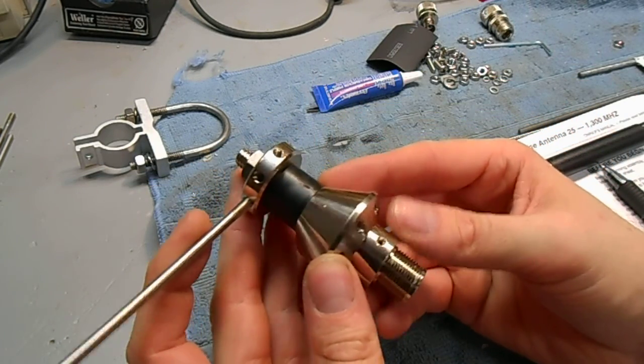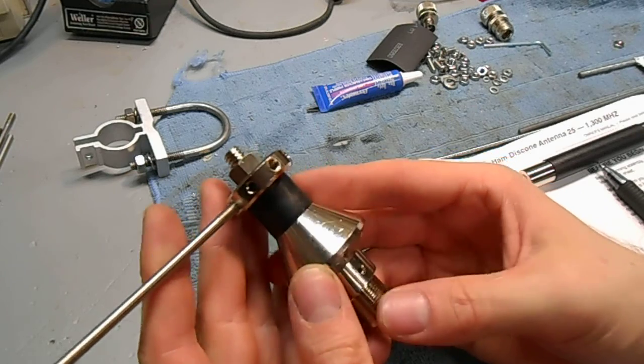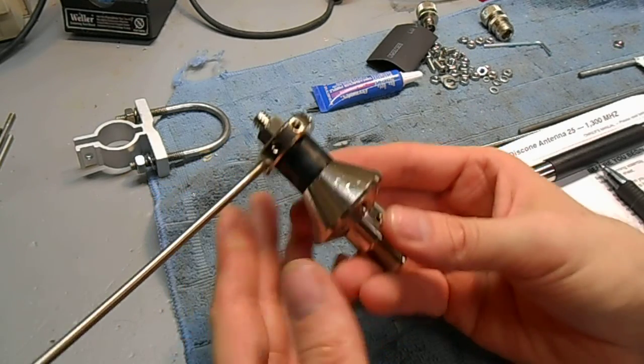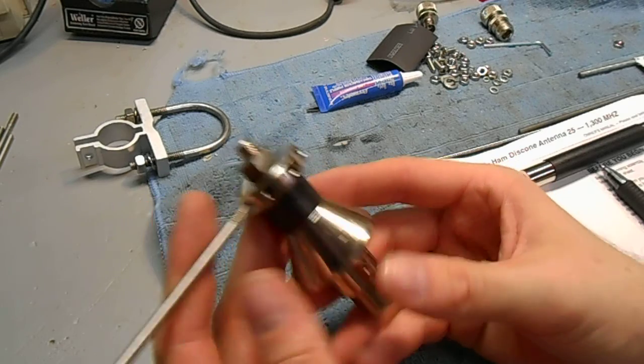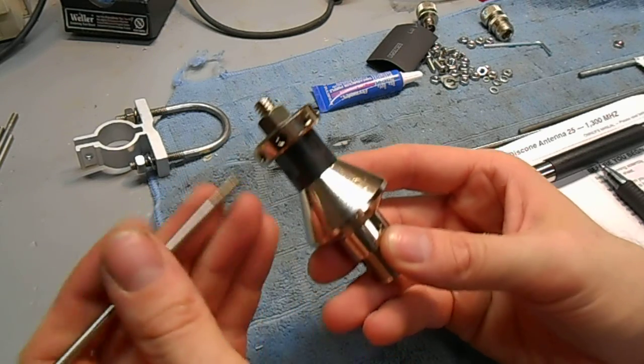The antenna is not at DC ground. So if you mount it outside, make sure you have a polyphasor or some sort of surge or lightning protection. Otherwise, you can zap your radio.